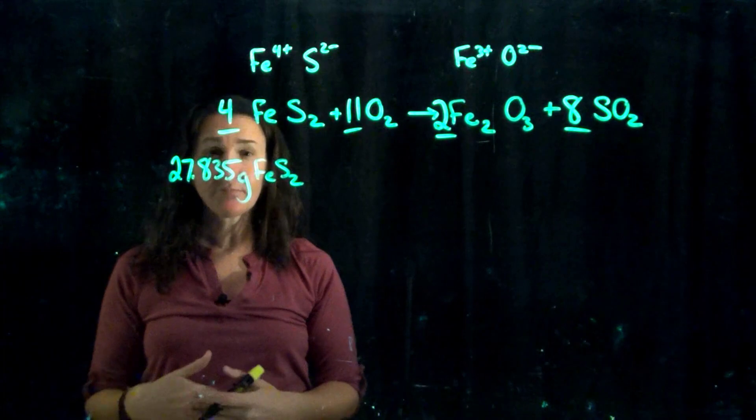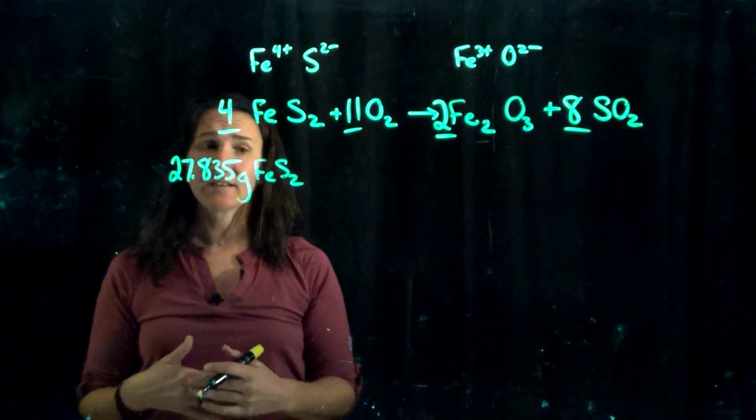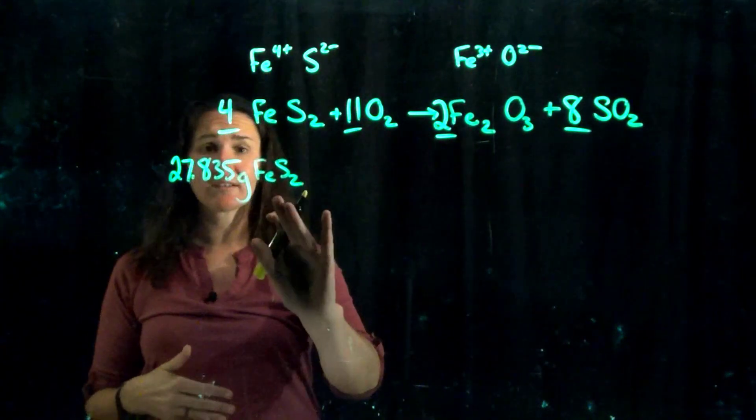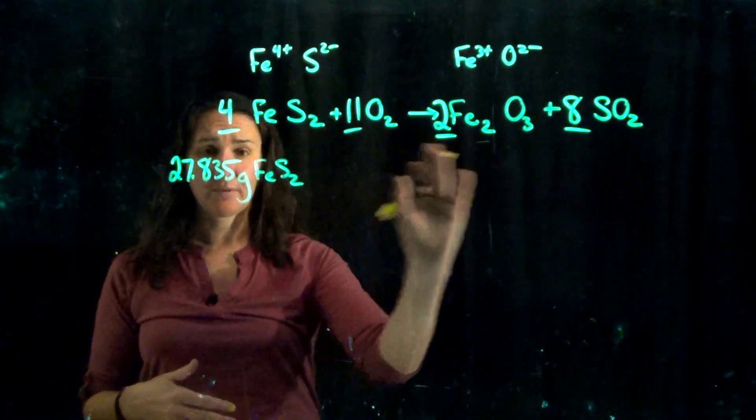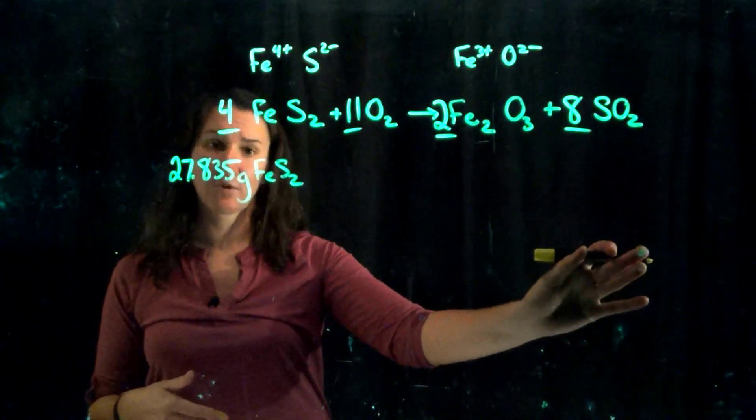That's the way I typically find I solve stoichiometry or limiting reagent problems. There are lots of ways to get there, but in the end you need to determine which one's limiting reagent, because if you just work this to the end, what if this is not the limiting reagent? You'll be wrong in your prediction of how much sulfur dioxide can be formed.